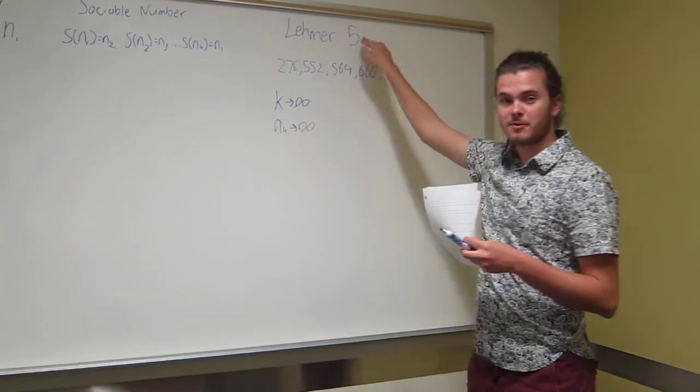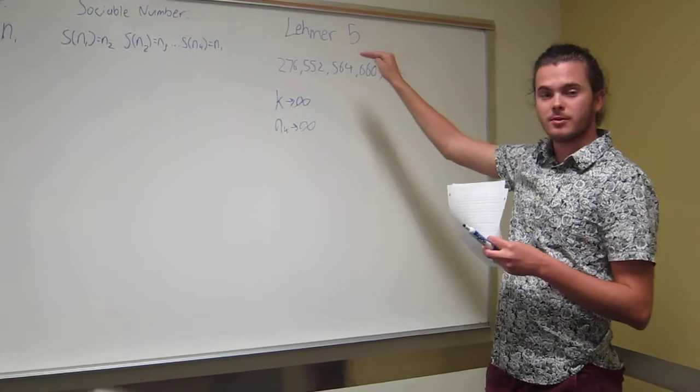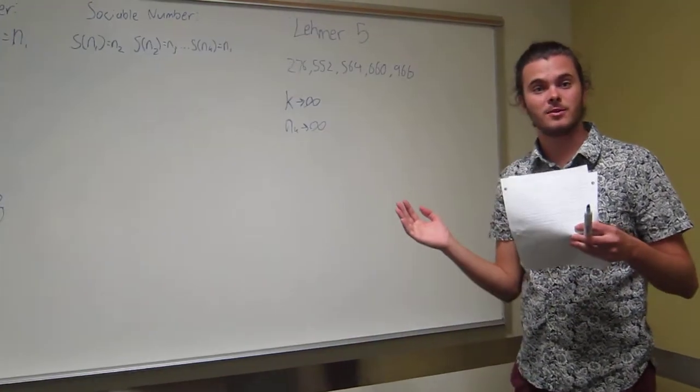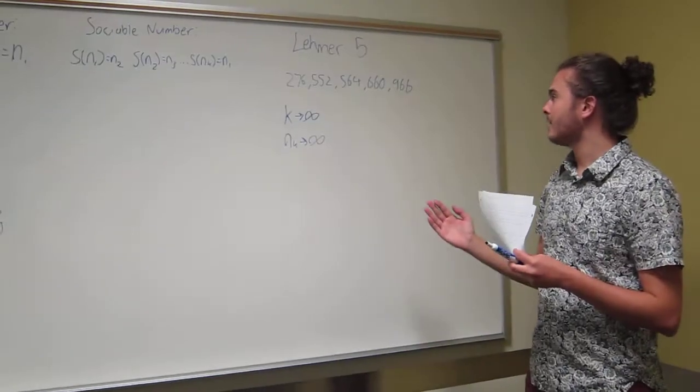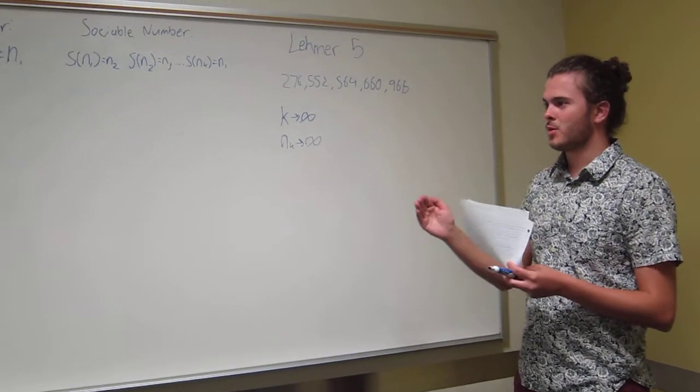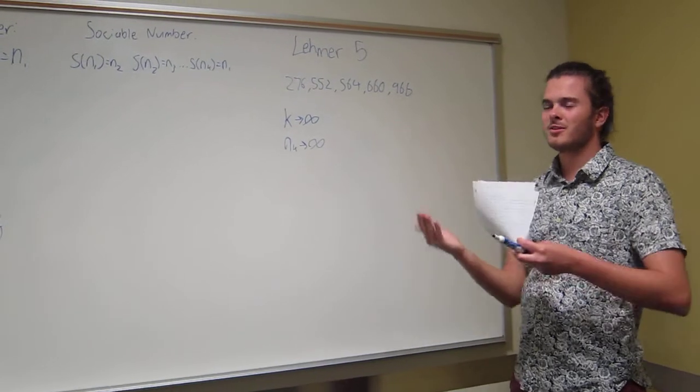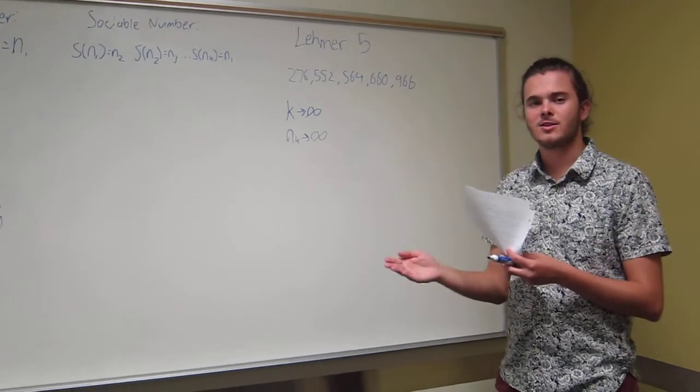Lehmer 5. Lehmer 5 is basically five numbers under a thousand that they don't know the end of the aliquot sequence still. It's really quite interesting, and that's just due to the fact that as you get to higher and higher numbers, it's harder to find the divisor, so it's harder to get the next term in the aliquot sequence.